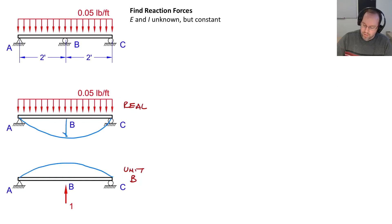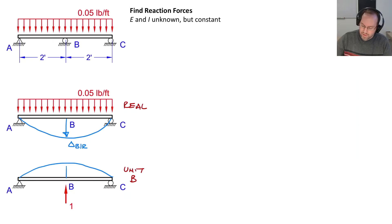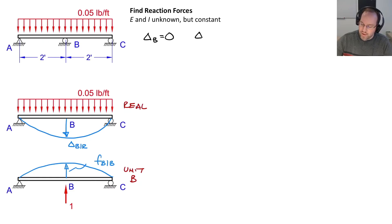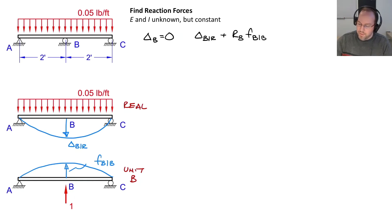Under the real applied loads, my displacement at B is delta_B/R, where /R stands for real applied loads. I can also find the displacement at B due to the unit load, which we call the flexibility — the flexibility at location B due to a unit load at location B. The constraint equation states that displacement at B must equal zero, so: displacement at B due to applied loads plus reaction force at B multiplied by flexibility at B due to unit load at B equals zero.